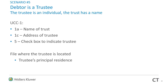Trust scenario five: the trustee is an individual and the trust has a name. The most important thing is that the trust is named. On box 1A, use the name of the trust. On 1C, the address of the trustee. Check box 5 to indicate it as a trust. For the trustee that's an individual, use their principal residence. For example, if Randy Shea is the trustee with an address of 1234 Main Street, Philadelphia, Pennsylvania, that is the address you use.